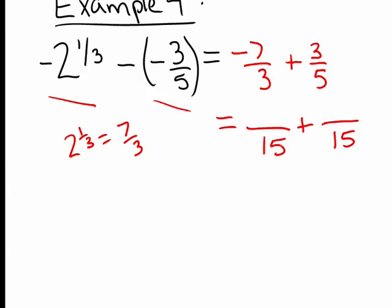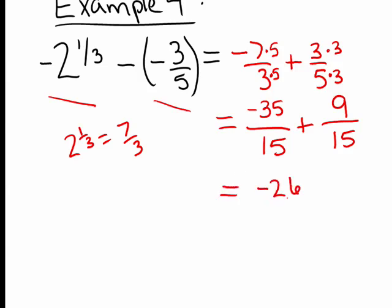What did I do to 3 to turn it into 15? I multiplied by 5, so the numerator becomes negative 35 while the denominator is 15. And in the second fraction, to turn 5 into 15, I multiplied by 3, so I do the same to the numerator: the numerator becomes 9 while the denominator becomes 15. Now I add across the top to get negative 26, and I keep the denominator of 15.